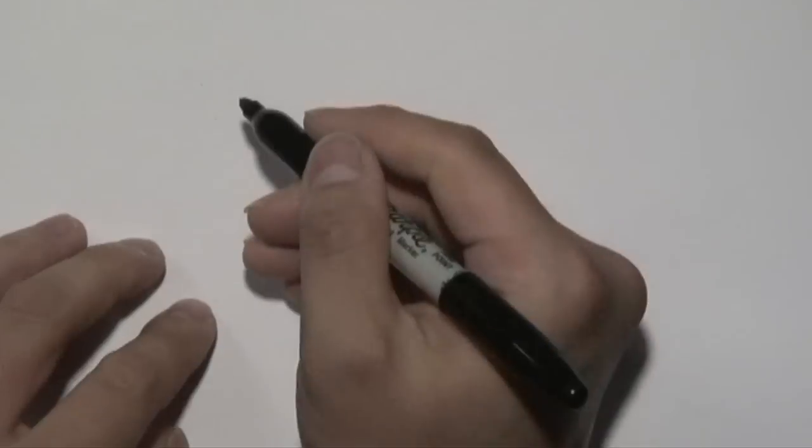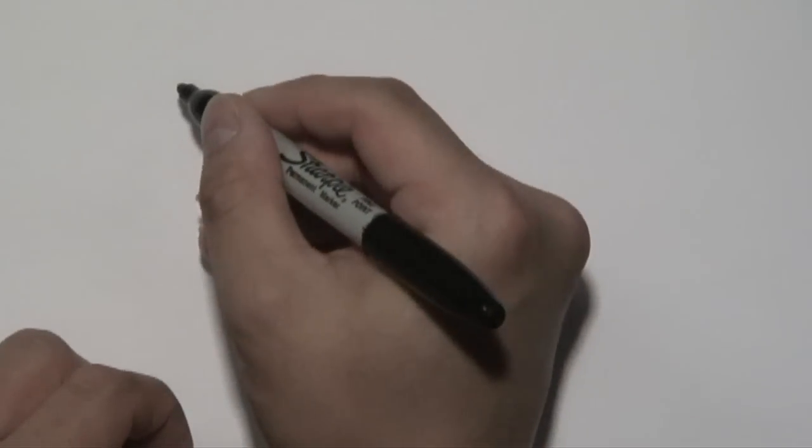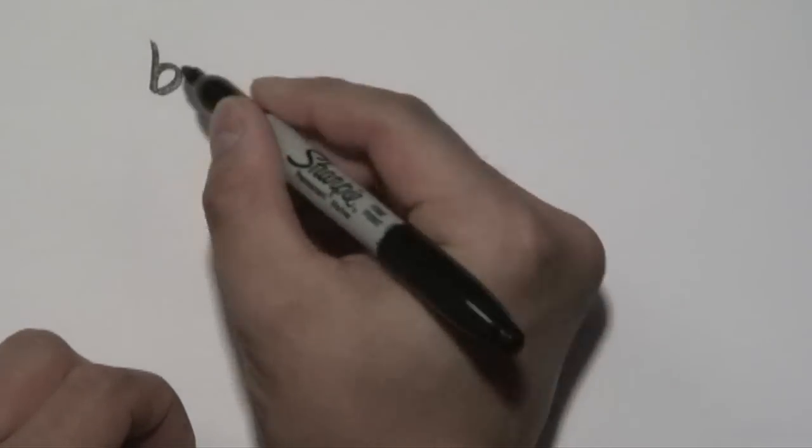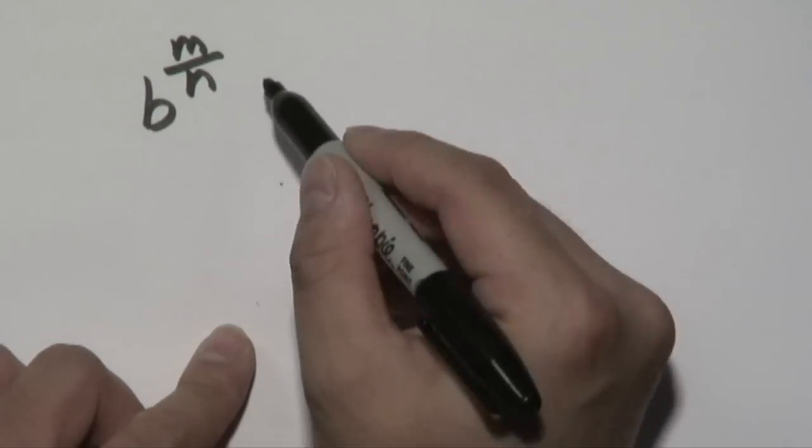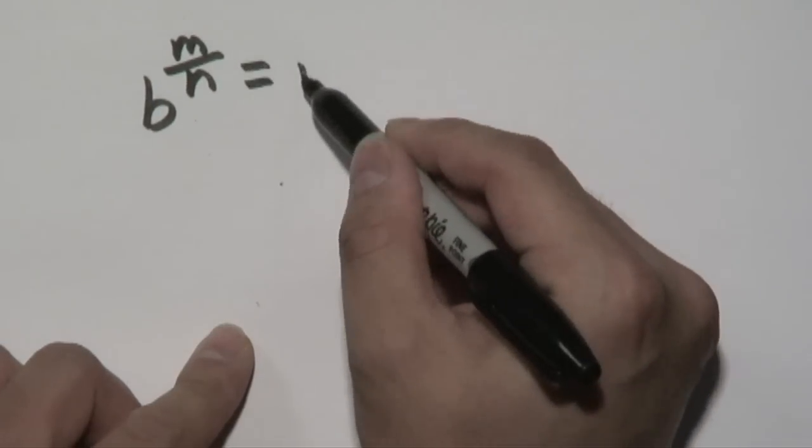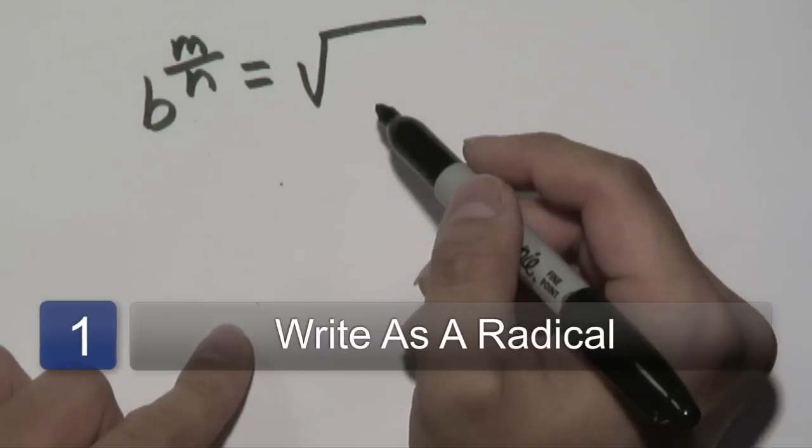Now one thing that you want to think about when it comes to radicals and exponents is this very important property here. If you have a base that's raised to a fraction power, anything of this sort can always be converted to a radical and vice versa.